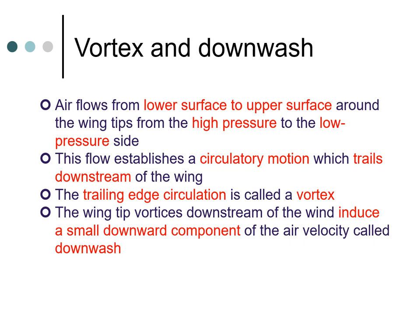To summarize: air flows from the lower surface to the upper surface around the wing tips, from the high pressure to the low pressure region. This flow establishes a circulatory motion which trails downstream of the wing. This trailing circulation is called a vortex, and one of the things this vortex does is that downstream of the wing it induces a small downwash component of air velocity. This downwash is caused by the tip vortices downstream of the wing.